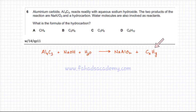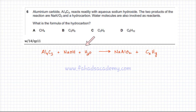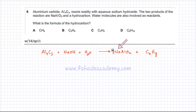We need to find the formula of the hydrocarbon, and the only way to do this is by balancing the reaction. There are four aluminiums on the left side and only one on the right, so we must balance aluminium. That gives us four molecules of NaAlO2, which contains four sodiums, so there should be four molecules of NaOH.